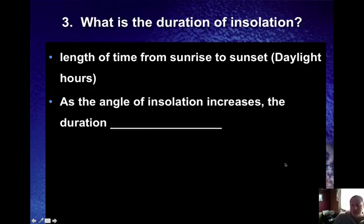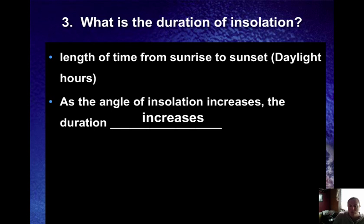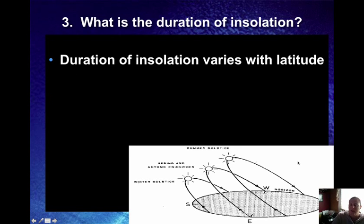As the angle of insolation increases, the sun gets higher up in the sky, and it takes a longer path to rise and set. So the duration of insolation will also be longer — the higher the sun is in the sky, the longer the length of the day. Think about June 21st — how high the sun is, it stays lighter much longer and our daytime hours are longer. In winter, the sun is much lower in the sky, causing a much shorter day. As angle and duration of insolation both increase, temperatures increase as well.